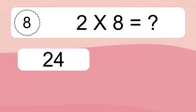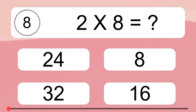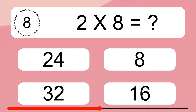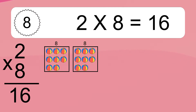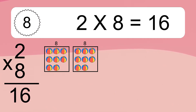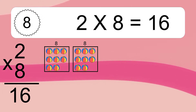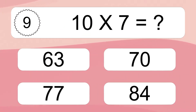2 times 8 equals what? 2 times 8 equals 16. We have 2 boxes, and each box has 8 colorful balls inside. If you count all the balls in all the boxes together, you will have 2 times 8 balls. This equals 16 balls.